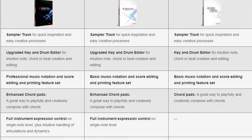Composition is where I think Elements comes into its own. Even though it's the entry-level DAW, it comes fully equipped with a sampler track, key and drum editor, basic music notation, and chord pads — an absolutely amazing feature that allows even a novice musician to string together complex chord progressions for inspiration. The sampler track is a stunning addition to the entry-level version. With Artist you get enhanced chord pads for more creativity, full instrument expression, and track versions, which let you create different variations on a theme.